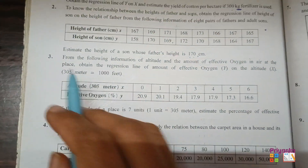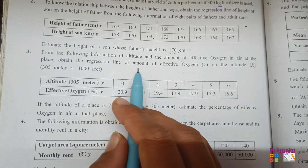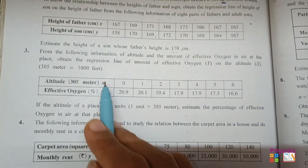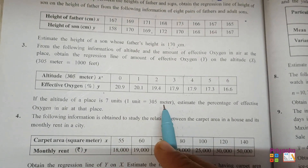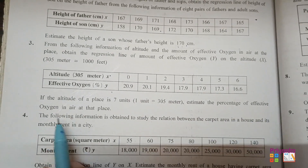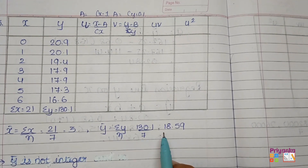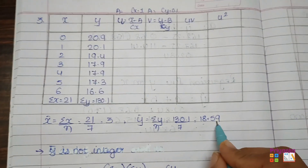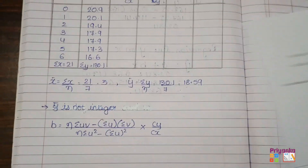Question number 3: from the following information of altitude and the amount of effective oxygen in air, obtain the regression line of effective oxygen on altitude x (where 305 meters = 1000 feet). Given x and y information, estimate the percentage of effective oxygen if the altitude is 7 units. Since the values are in decimals and not integers, we will use the UV shortcut method.